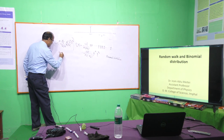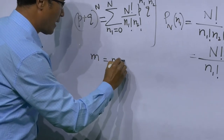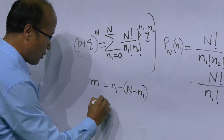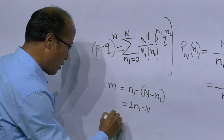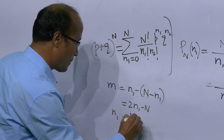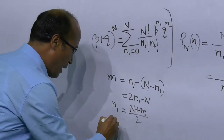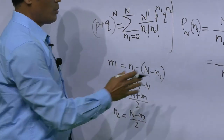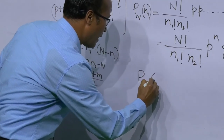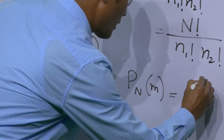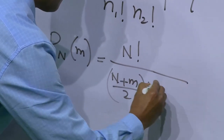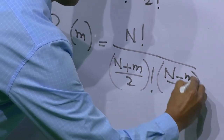In terms of M, since M equals N1 minus N2 and N1 plus N2 equals N, we get N1 equals (N plus M) divided by 2, and N2 equals (N minus M) divided by 2. So we can write P_N(M) equals N factorial divided by [(N+M)/2]! times [(N-M)/2]! times P to the power (N+M)/2 times Q to the power (N-M)/2.